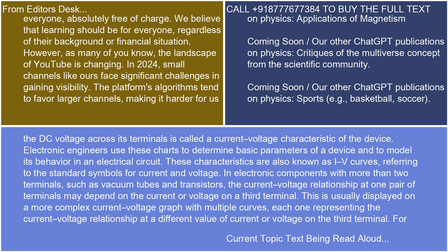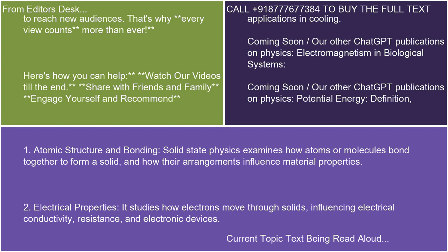Here are key aspects of solid-state physics. 1. Atomic Structure and Bonding: Solid-state physics examines how atoms or molecules bond together to form a solid and how their arrangements influence material properties. 2. Electrical Properties: It studies how electrons move through solids, influencing electrical conductivity, resistance, and electronic devices.